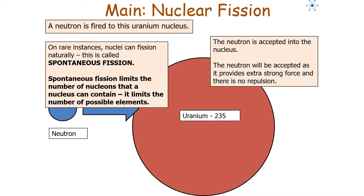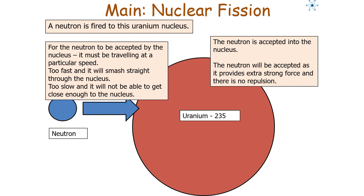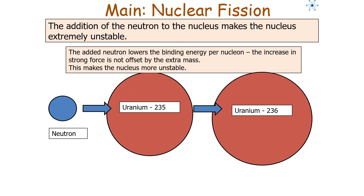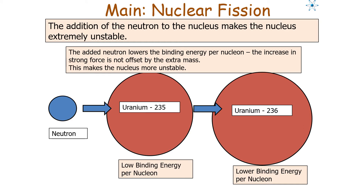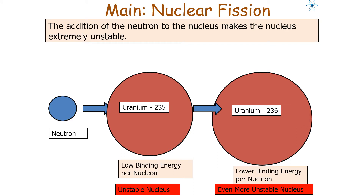For a neutron to be accepted in induced fission, the nucleus must be travelling at a particular speed — too fast and it will smash straight through, too slow and it will not get close enough. The addition of the neutron makes the nucleus extremely unstable: the added neutron lowers the binding energy per nucleon, and the increase in strong force is not offset by the extra mass, giving us an even lower binding energy per nucleon and an even more unstable nucleus.